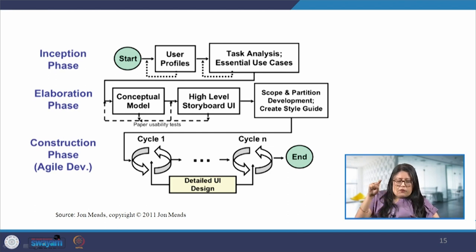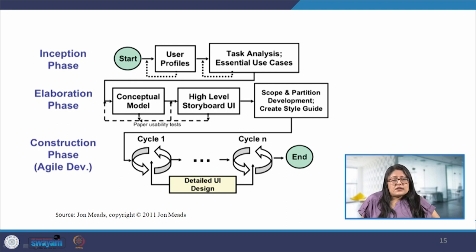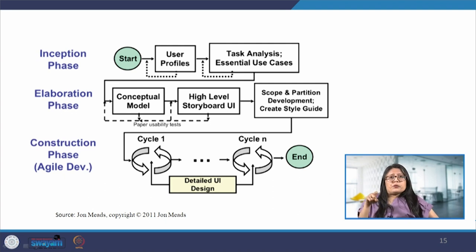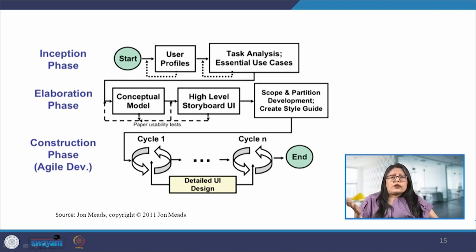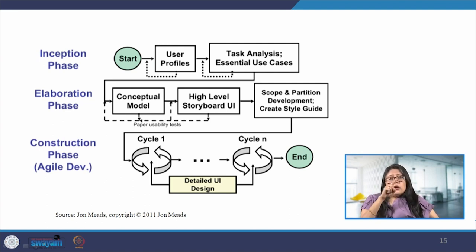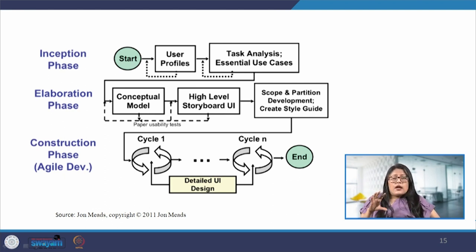A style guide is then created, followed by detailed user interface design — with cycles one to n indicating that more than one cycle is expected. This is a good example of how we can arrange and break a project into simpler phases and then find solutions.